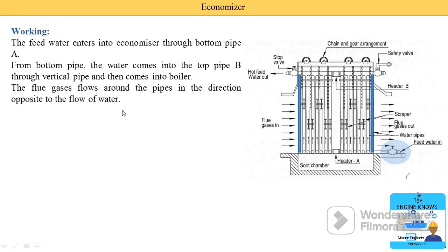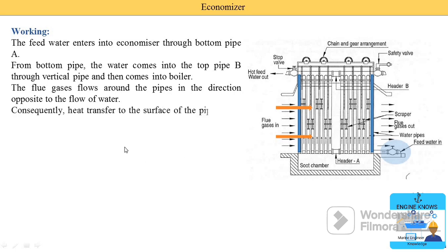The flue gases flow around the pipes in the direction opposite to the flow of water — water moves upward and the flue gases move in the horizontal direction, opposite to the water flow, as indicated by the orange arrows. Consequently, heat transfer to the surface of the pipe takes place. Water flows inside the pipe and flue gases pass outside, heating the pipe material, which in turn heats the water.